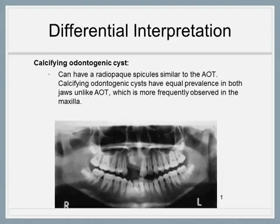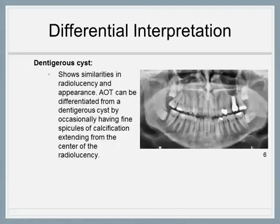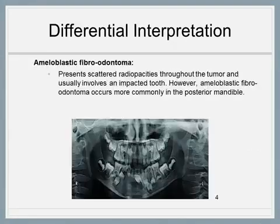In some instances, a calcifying odontogenic cyst will have an ill-defined border, unlike an adenomatoid odontogenic tumor. A dentigerous cyst is also a differential for AOT due to its similarities in radiolucency and unilocular appearance. Both entities are associated with an impacted tooth. AOT can be differentiated from a dentigerous cyst by occasionally having fine spicules of calcification extending from the center of the radiolucency.